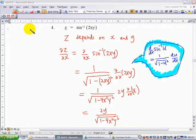Let's look at example 4 where we're going to do the partial derivative. In this case, z equals sine inverse of 2xy, so z depends on x and y. When x changes, z will change, and when y changes, z will also change.